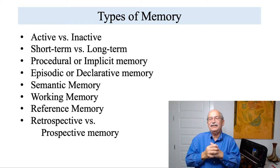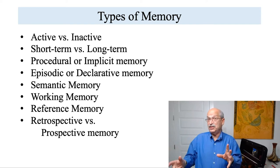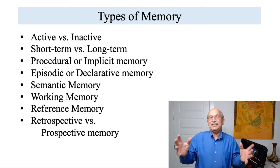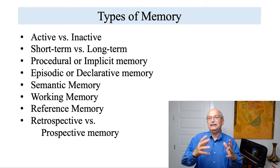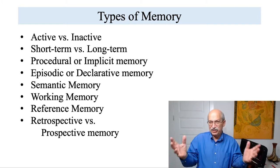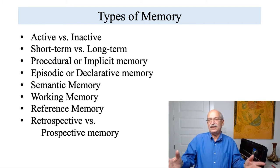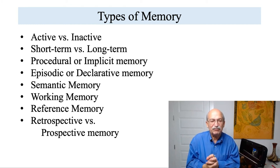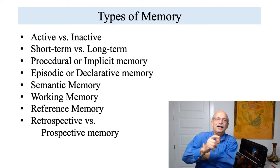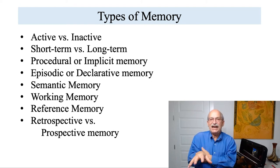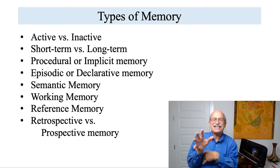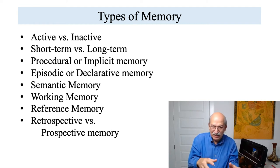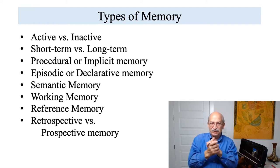Semantic memory, in contrast to procedural and implicit memory, is memory for knowledge about the world — how many branches of government do we have, who is president, what's the capital of Texas. That's semantic memory. In this course, the kinds of conditioning and learning procedures we've been discussing mostly fall into the category of procedural and implicit memory.